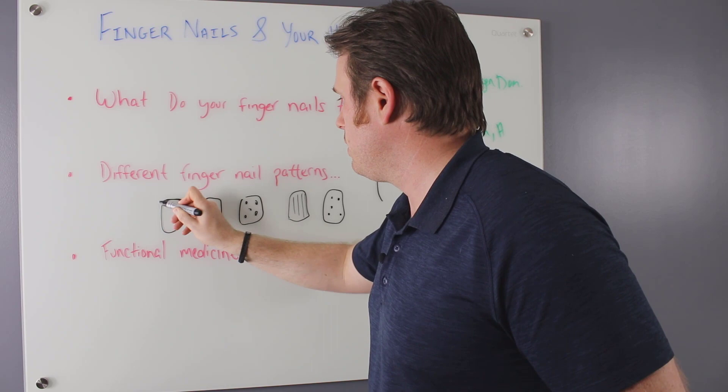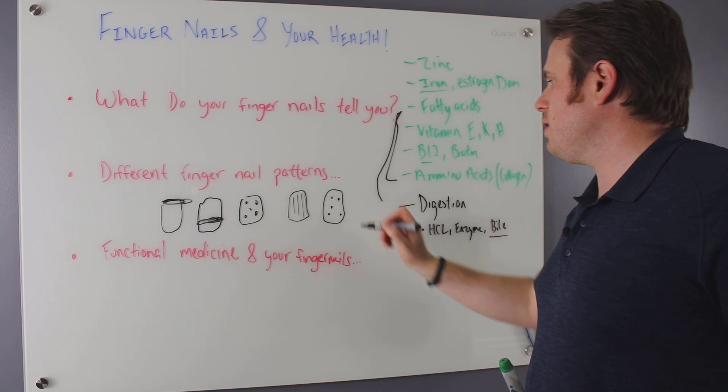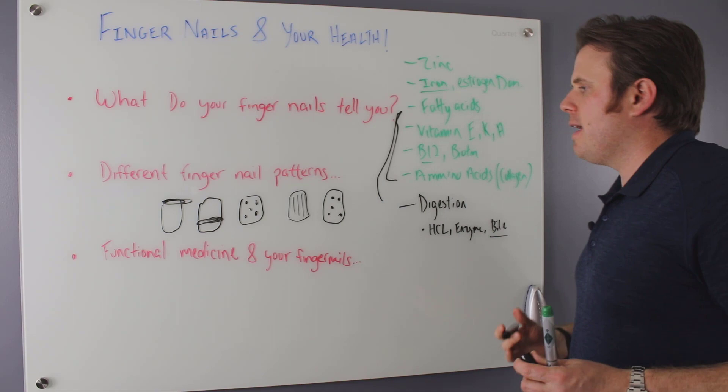And then we have Terry's nails, which are more at the tip. It's kind of a white spot at the tip. Bose lines are going to be more like a vertical ridging, but across the sides. And then Terry's lines are going to be white at the tip. So Terry's, Bose, we have the white spots, we have the vertical ridging. These are pitting, more from psoriasis.